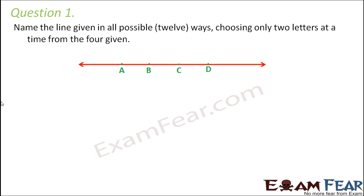Question number 1. Name the line given in all possible ways, i.e. 12 possible ways, choosing only 2 letters at a time from the 4 given.